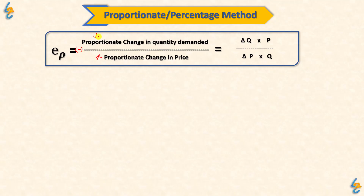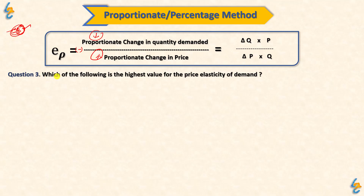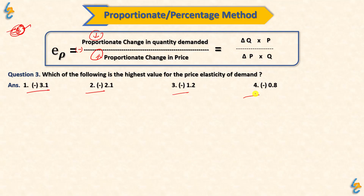This minus sign means that price elasticity of demand is negative — reflecting the inverse relationship between price and quantity. If price increases, quantity decreases. So if you are given a price elasticity of demand of minus 3, it means the absolute value is 3, and the demand is elastic. We ignore the negative sign and just use the absolute value. For example, if asked which of the following is the highest value for price elasticity of demand among options like −3.1, −0.8, the answer is 3.1 in absolute terms — not 0.8.